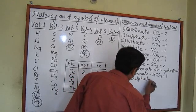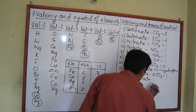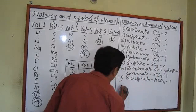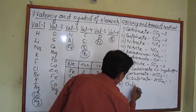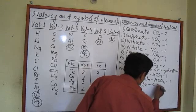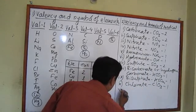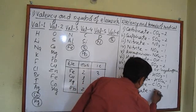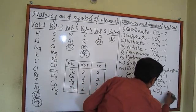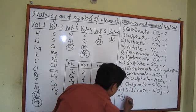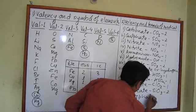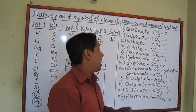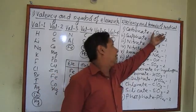Bisulfate, also called hydrogen sulfate, has the formula HSO4 and valency one. Chlorate (ClO3) has valency one. Silicate (SiO3) has valency two. Phosphate (PO4) has valency three.